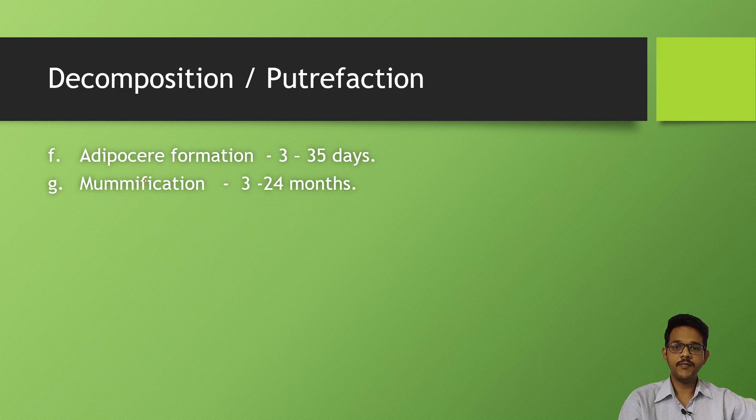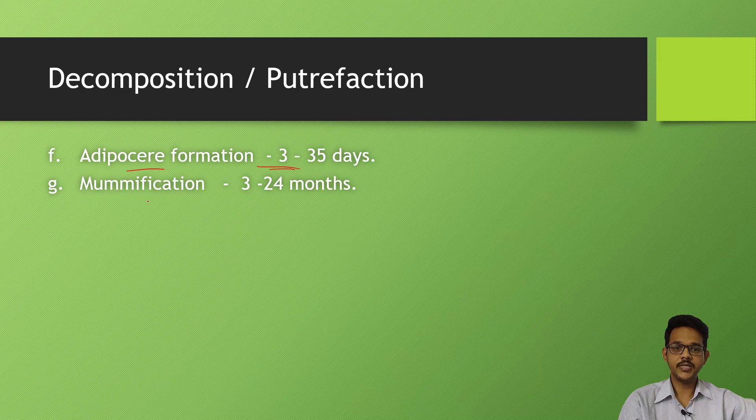Some modified forms of putrefaction like adipocere formation takes up to three to five weeks. In some environmental conditions, body may get modified - modification may occur which may take up to three to twelve months.